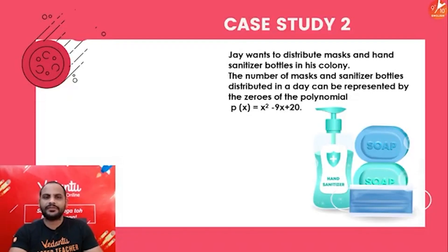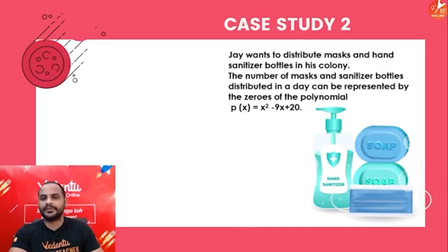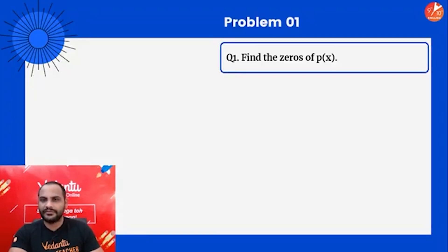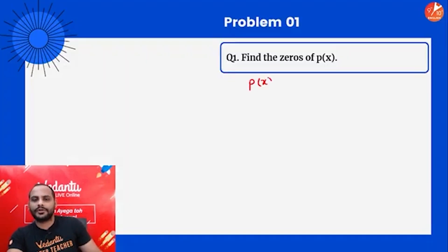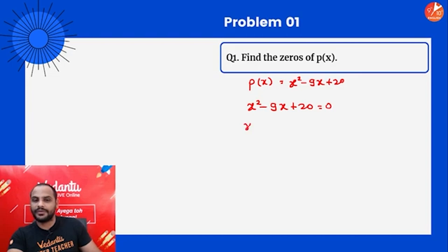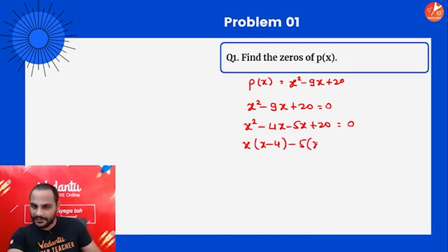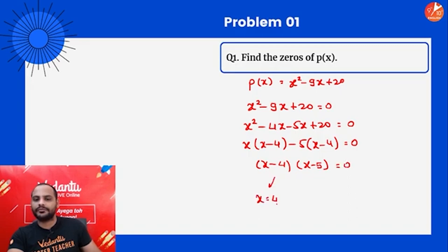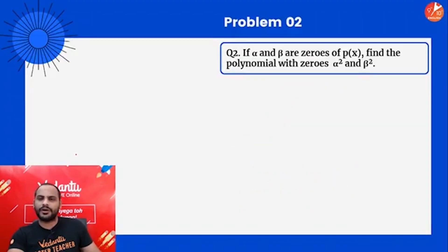Case Study 2: Jay wants to distribute masks and hand sanitizer bottles in his colony. The number of masks and sanitizer bottles distributed in a day can be represented by the zeros of the polynomial x² - 9x + 20. Find the zeros of this polynomial. Making it equal to zero: x² - 9x + 20 = 0 → (x - 4)(x - 5) = 0, so x = 4 or x = 5. These are the zeros.